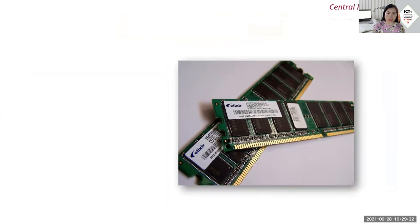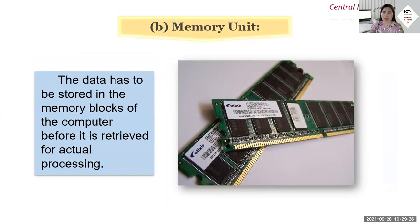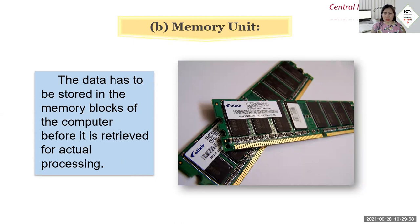Another part of the central processing unit is the memory unit. On the motherboard, this memory card stores data before it is retrieved for actual processing. We use it to store files and documents — we create them, save them, and later retrieve them. It is the memory unit that allows you to access your files in the future.